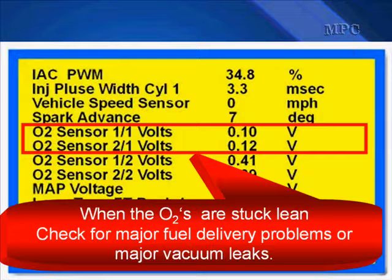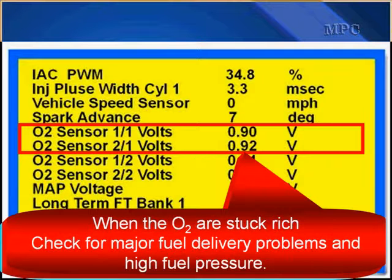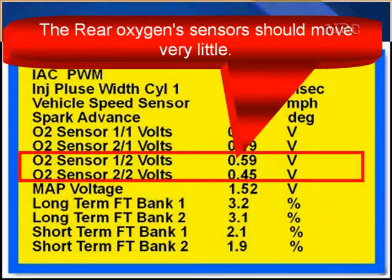When the O2s are stuck lean, check for a major fuel delivery problem or a vacuum leak. In this case they're not crossing — they're always staying low. If they're always staying high and they're not crossing, when the O2s are stuck rich, go ahead and check for major fuel delivery problems and high fuel pressure. The rear oxygen sensor should move very little.